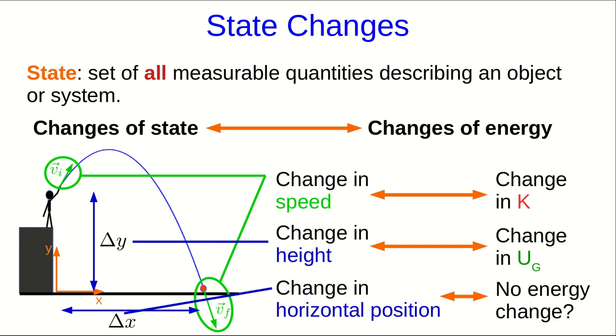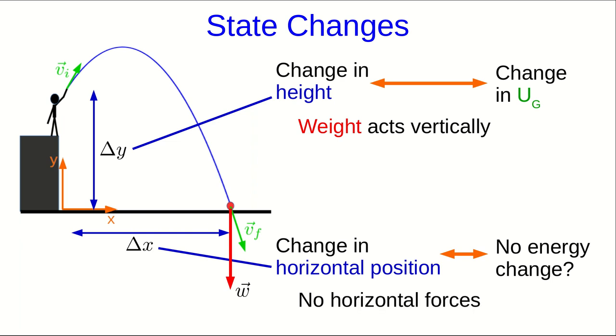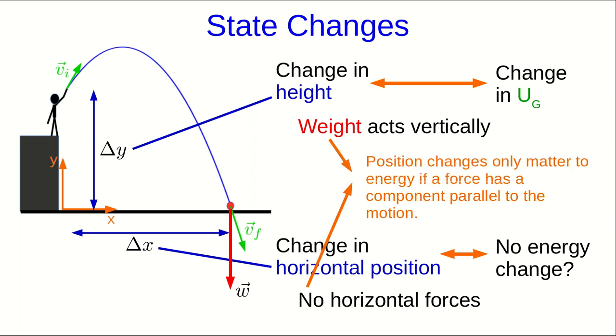There's something else going on here, though, that's more subtle. There's a change in horizontal position, but that doesn't seem to be associated with any energy change. Why is that? So let's contrast the change in height with the change in horizontal position. The difference here is that there is a weight force acting on the ball which acts vertically, but there are no horizontal forces. And this shows us a bit of a rule, which we'll elaborate on more later when we talk about work. Position changes only matter for energy purposes if there is a force that has a component parallel to the motion.